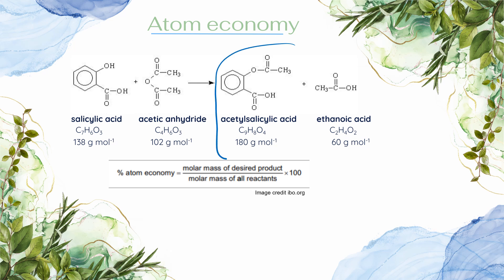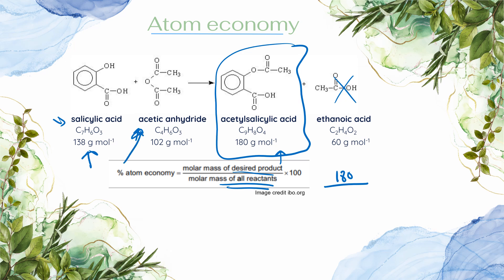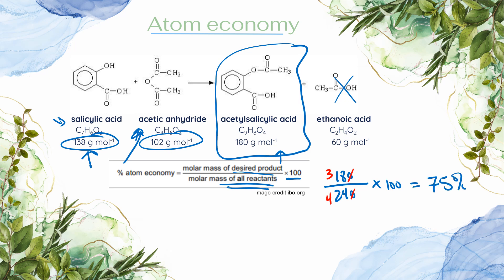Let's do one more example using a real chemical equation. One way to make acetylsalicylic acid — also known as aspirin — is to react salicylic acid and acetic anhydride. We don't care about the ethanoic acid byproduct; it is not our desired product. To calculate percent atom economy: take the molar mass of acetylsalicylic acid, which is 180 g/mol, divided by the molar masses of all reactants — salicylic acid (138 g/mol) plus acetic anhydride (102 g/mol) — giving 240 g/mol total. Times 100: we can simplify by canceling zeros, then dividing top and bottom by 6: 18 over 6 is 3, 24 over 6 is 4, so 3 over 4 is 0.75, times 100 gives an atom economy of 75%.